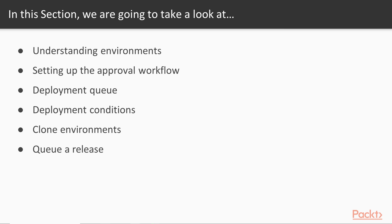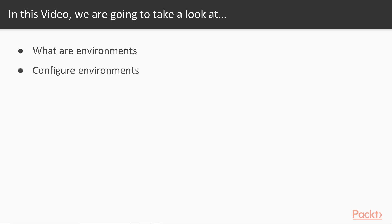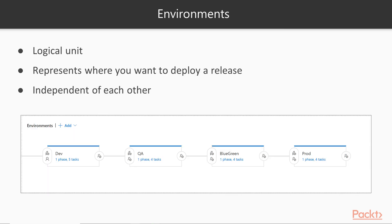In this particular video, we're going to help you understand what environments are. You're going to learn what an environment is and how you configure these environments to release and deploy your software. Environments are nothing more than a logical unit — a logical grouping that represents a place where you want to actually deploy your release. They're independent of each other; each environment is self-contained, and one should not depend on another in order to deploy successfully.